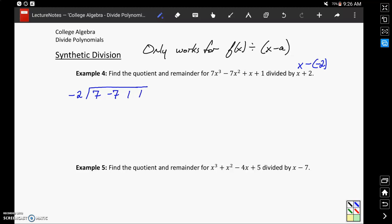So in this case just 7, negative 7, 1, and 1. Next we'll skip a row to leave ourselves some space to work, and draw a horizontal bar, and drop down this very first coefficient.